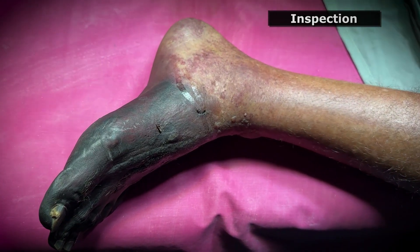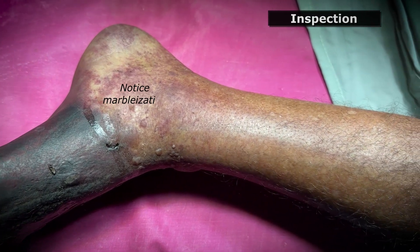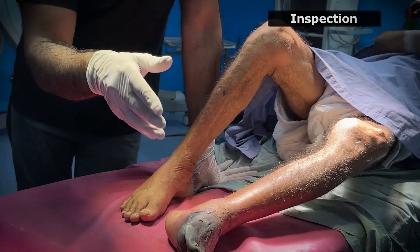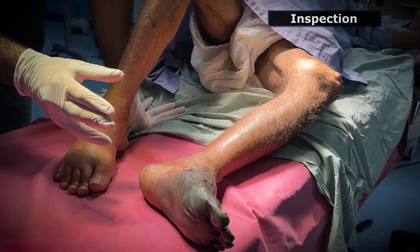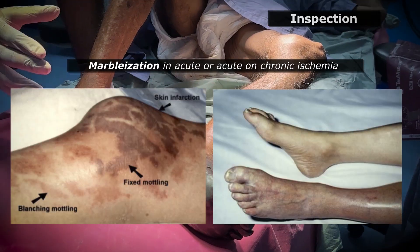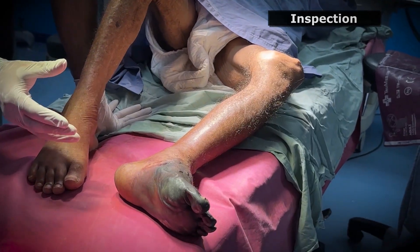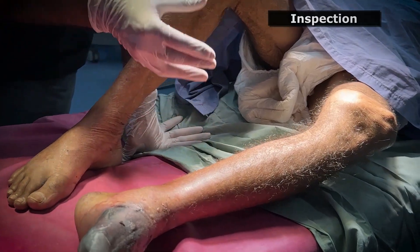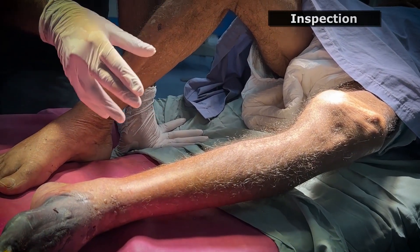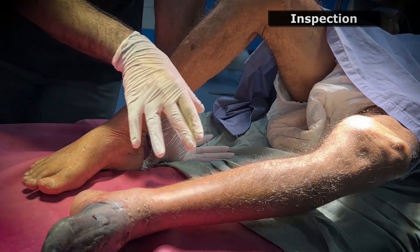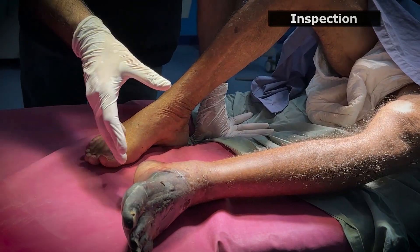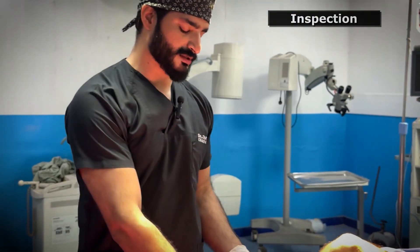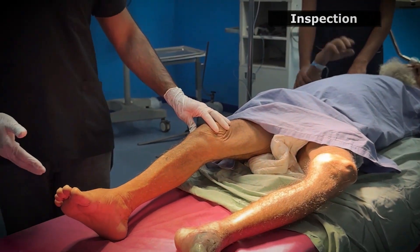Check for any skin discoloration. As we can see in this limb, there is obvious blackish discoloration of the forefoot starting from the toes to the mid-foot. Notice whether this is dry gangrene or wet gangrene, and whether it is continuous gangrene or skip lesions. Skip lesions or marbleization are present in acute limb ischemia. If it is continuous and dry gangrene, it indicates chronic limb ischemia. Then check skin changes: loss of hair and thick shiny skin, which are signs of acute limb ischemia. In this patient, there is no hair loss, no thick shiny skin; there is dry, continuous gangrene involving the distal half of the foot, indicating chronic limb ischemia.